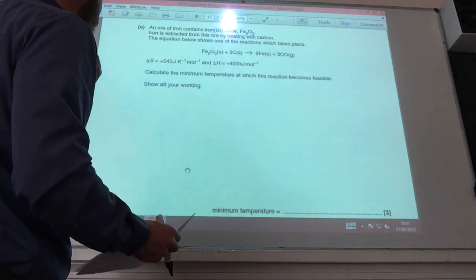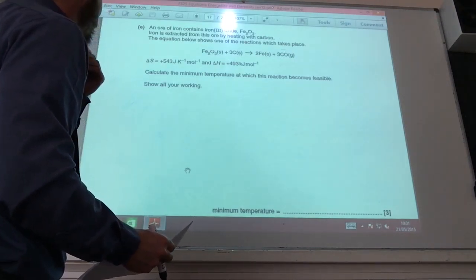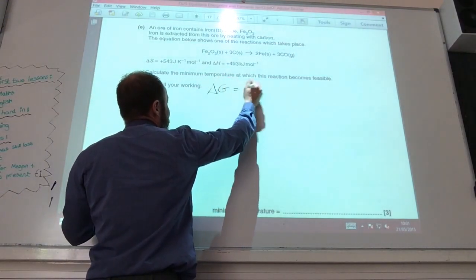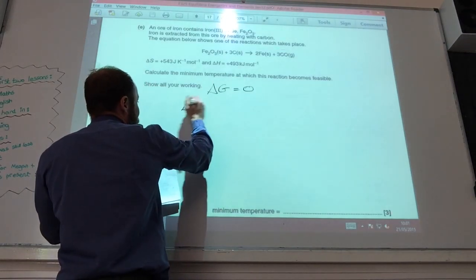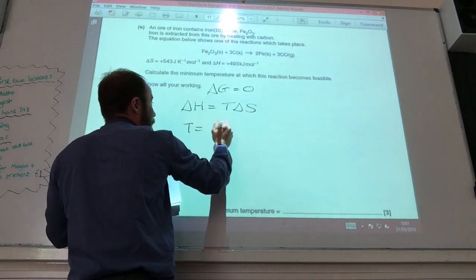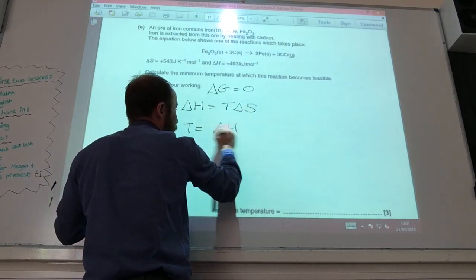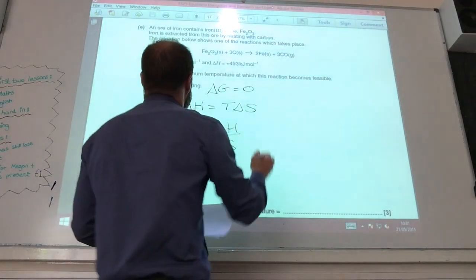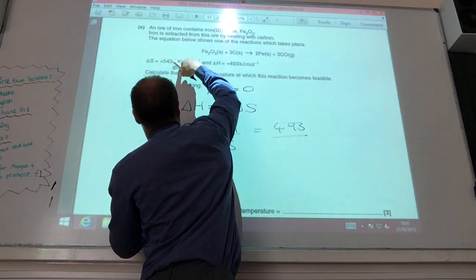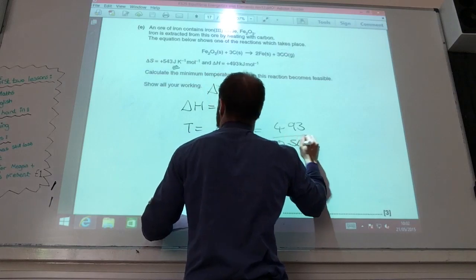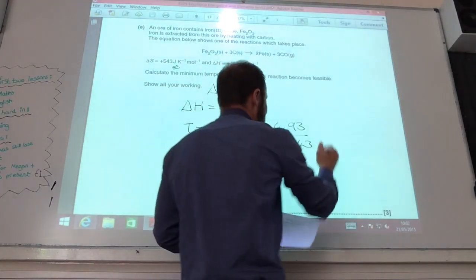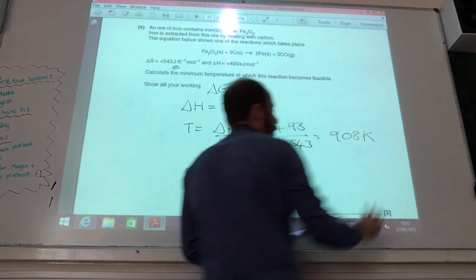Okay, so reduction of iron oxide. They give me delta S and delta H. Calculate the minimum temperature. Minimum temperature is when delta G is equal to zero. So if delta G equals zero, delta H equals T delta S. So T is delta H over delta S. Delta H, they told me it's 493. Delta S, remember that's in joules per Kelvin per mole, so you need to convert it to kilojoules per Kelvin per mole by dividing by a thousand. And if you do that, you get 908 Kelvin.